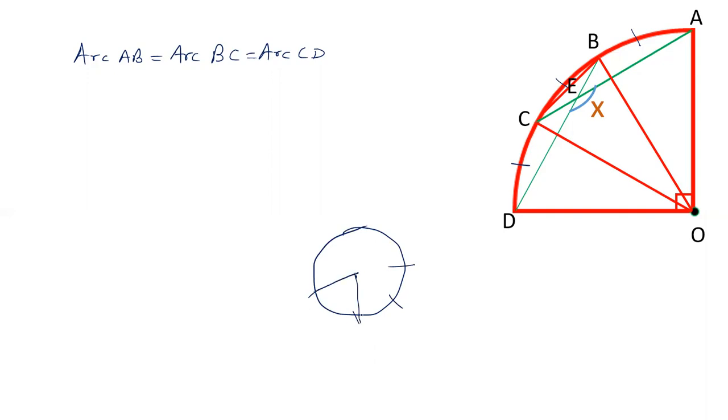If two arcs are equal, the angle subtended by the two arcs at the center will be equal. Here there are three arcs and angles subtended by these arcs at the center are equal. Let's say these angles are theta.